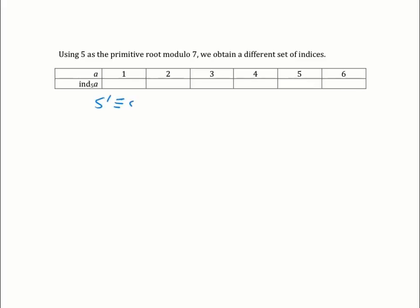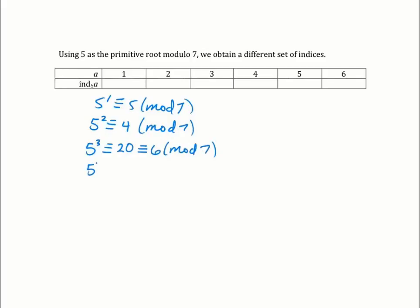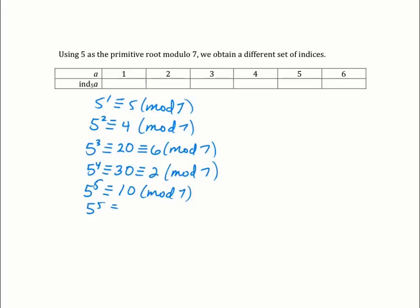5 to the first is 5 mod 7. 5 to the second is 25, which reduces to 4 mod 7. 5 cubed is 5 times 5 squared, or 20, which reduces to 6 mod 7. 5 to the fourth is 5 times 5 cubed, or 30, and 30 reduces to 2 mod 7 since 7 goes into 28. 5 to the fifth is 5 times 5 to the fourth, so 5 times 2 is 10 mod 7, which reduces to 3. And 5 to the sixth is 5 times 5 to the fifth, or 15, reducing to 1 mod 7.